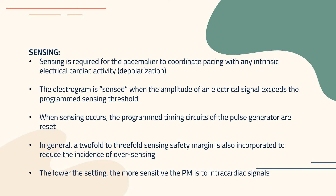For sensing, sensing is required for the pacemaker to coordinate pacing with any intrinsic electrical cardiac activity or depolarization. The electrogram is sensed when the amplitude of an electrical signal exceeds the programmed sensing threshold. When sensing occurs, the programmed timing circuits of the pulse generator are reset. A two-fold to three-fold sensing safety margin is incorporated to reduce over-sensing. The lower the setting, the more sensitive the pacemaker is to intracardiac signals.